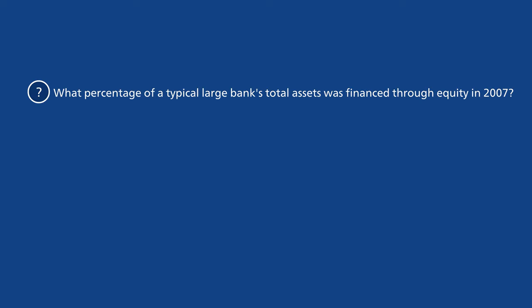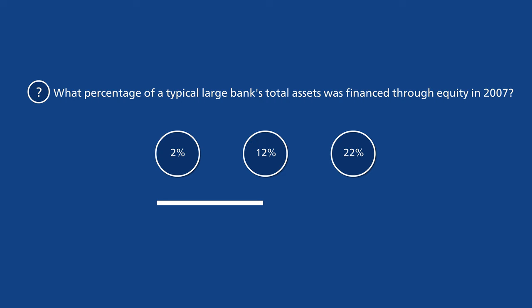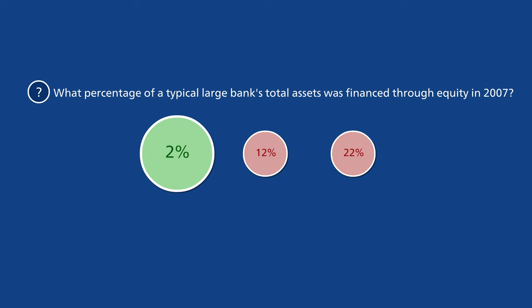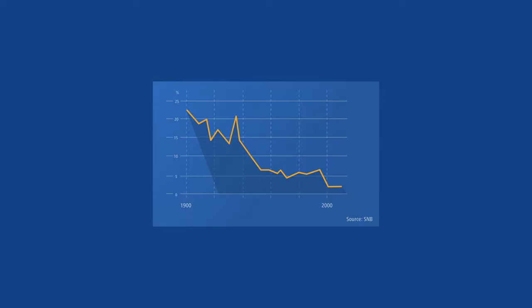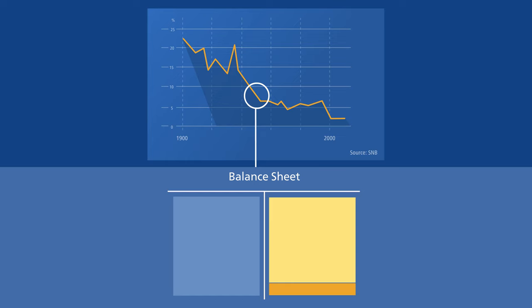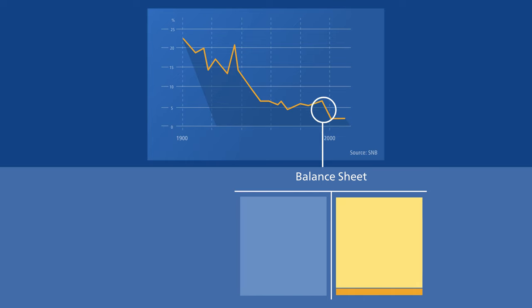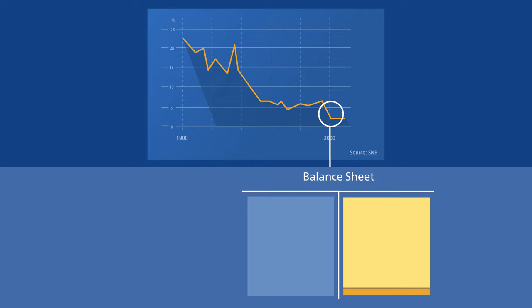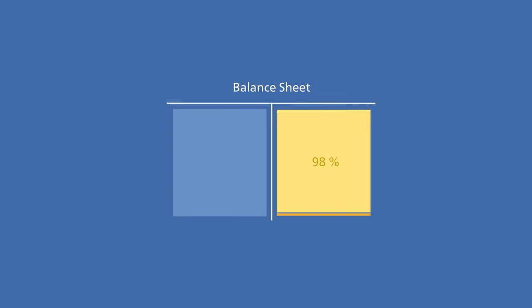What percentage of a typical large bank's total assets was financed through equity just before the financial crisis in 2007? The right answer is 2%. A hundred years ago the percentage was around 20%. After World War II the percentage dropped from 10 to about 5%. In the boom phase before the crisis, equity only accounted for around 2% of the balance sheet total — meaning 98% of the bank was financed with debts.